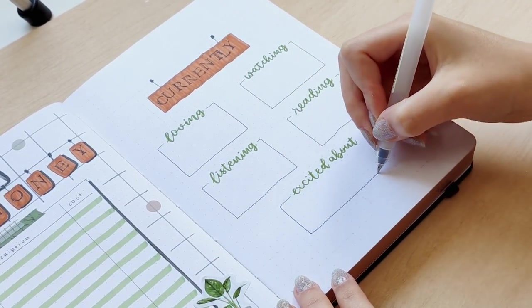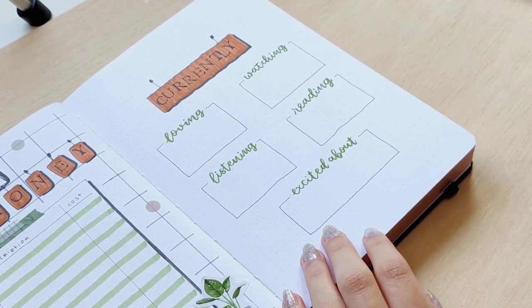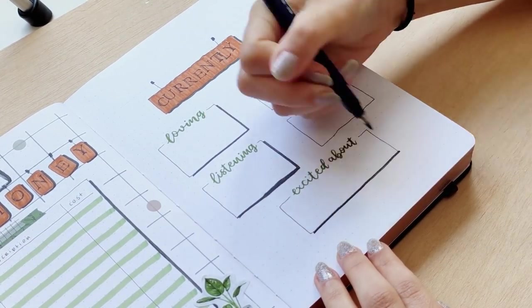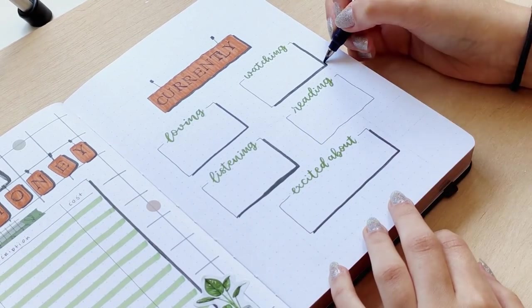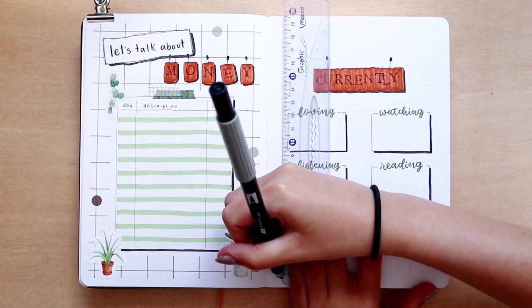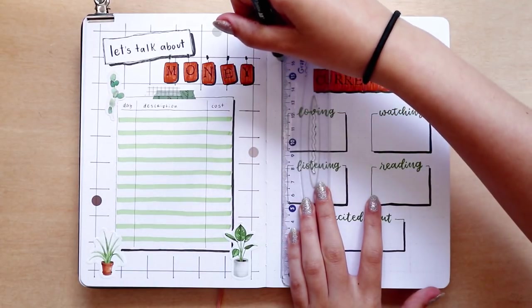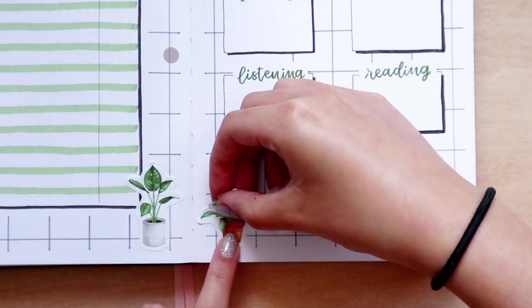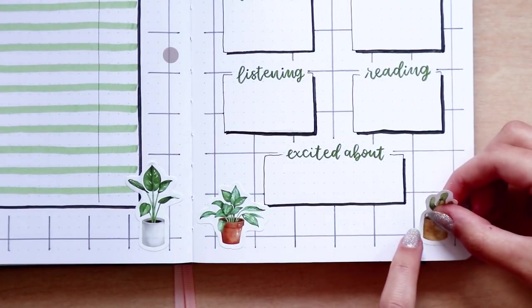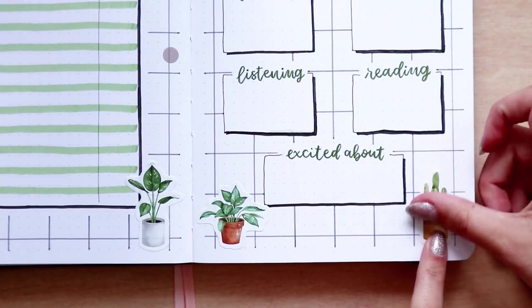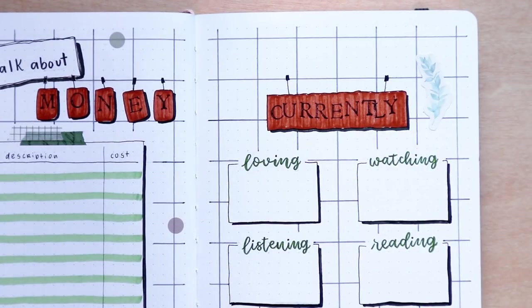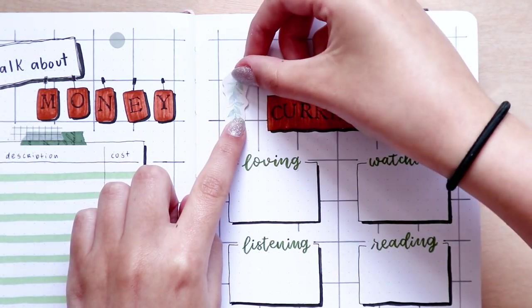You can adapt this page however you want, and do it as a review for the month, for example. I think this page is not a must-have in your bullet journal, but every now and then I like to try new pages, so I decided to try this one for July. I will also post this spread on my Instagram once it's filled in.